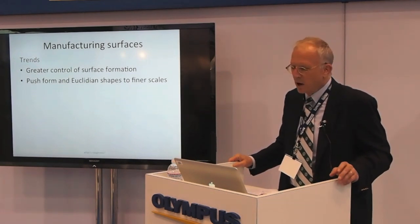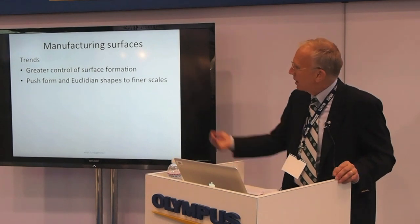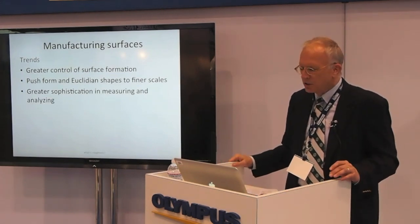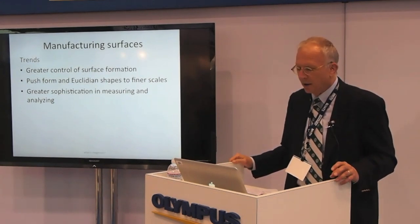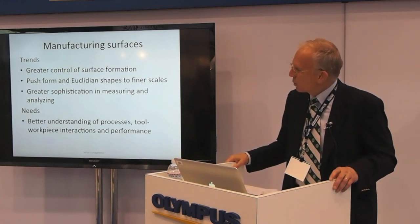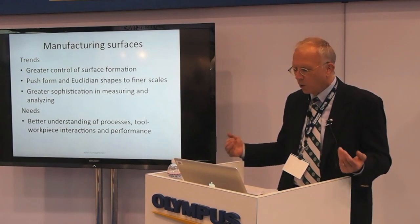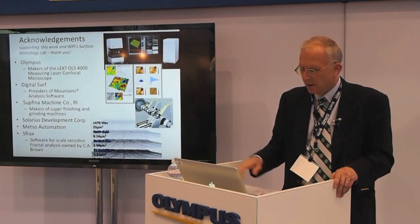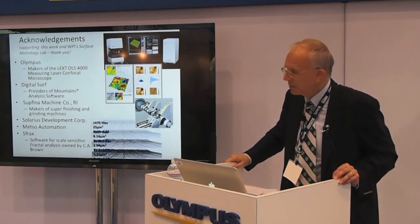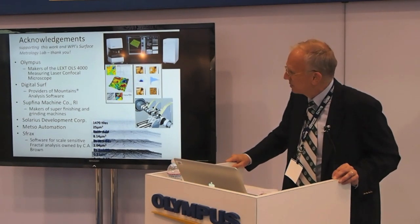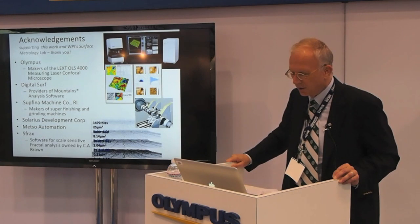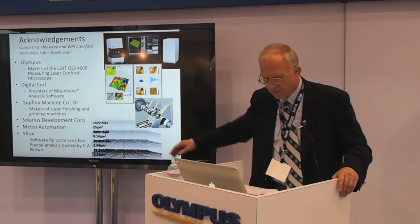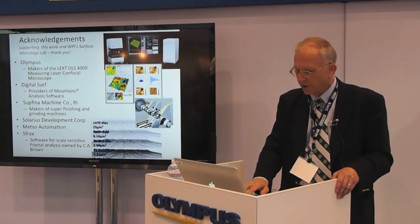What are we seeing in manufacturing surfaces? The trend is toward greater control in surface formation, pushing form and Euclidean shapes to finer scales — like those 500 nanometer grooves. We're also seeing greater sophistication in measuring and analyzing these surfaces. The needs include a better understanding of processes, tool-workpiece interactions, and performance. I want to acknowledge Olympus, Digital Surf — who make the analysis software we use — and companies like Safina for superfinishing and Mezzo that make valves. I'll talk in the third part of this series about some of the software we've developed.